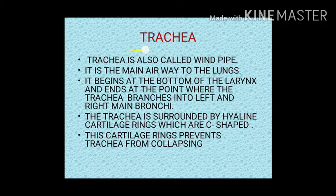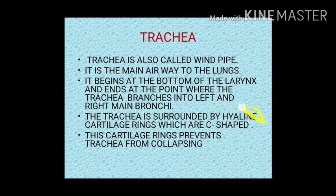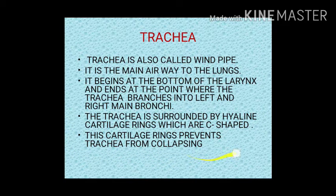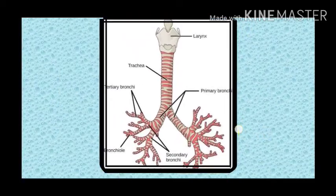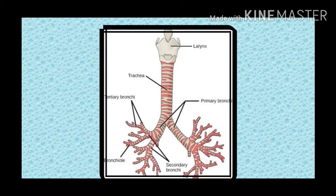Moving on to the trachea, also called the windpipe. It is the main airway to the lungs. It begins at the bottom of the larynx and ends at the point where the trachea branches into the left and right main bronchi. The trachea is surrounded by hyaline cartilage rings, which are C-shaped. These cartilage rings prevent the trachea from collapsing. In the diagram you can see the larynx above the trachea, the rings of cartilage around the trachea, and the trachea branching into the primary bronchi.